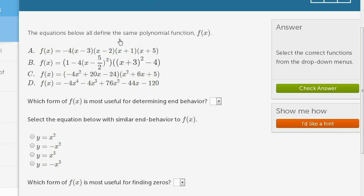The equations below all define the same polynomial function f of x. They've just written f of x in different ways. Here they fully factored f of x out as negative 4 times x minus 3 times x minus 2 times x plus 1 times x plus 5.